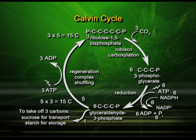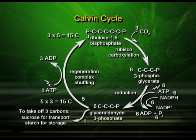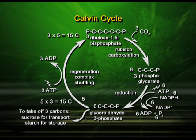Next, 3-phosphoglycerate, at the cost of NADPH — which was a product of the light reaction — and also ATP, which was also a product of the light reaction, these two are utilized in the second step called reduction. In reduction, 3-phosphoglycerate is converted to glyceraldehyde 3-phosphate. The plant needs to use NADPH and ATP from the light reaction to drive this conversion.